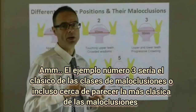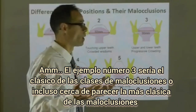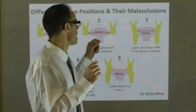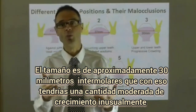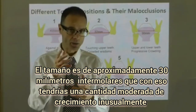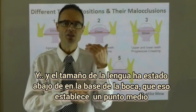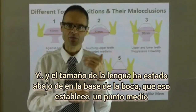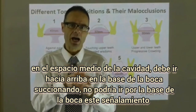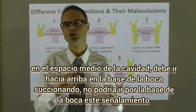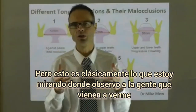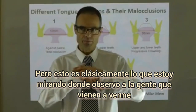Example number three is the classic class one malocclusion, or even class two, or even mildly class three malocclusions, where there's approximately a 30mm inter-molar width. With that, you'll usually have a moderate amount of crowding. The tongue sits down from the roof of the mouth — it sits midway in the mid-space of the oral cavity. It might go up to the roof of the mouth for swallowing, or it might not. But this is the classic presentation I'm seeing when people come in to see me.